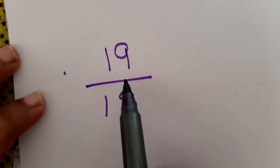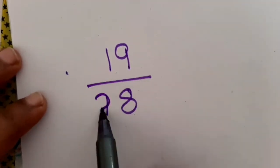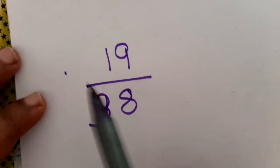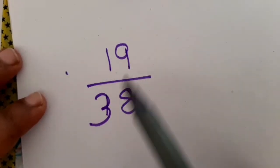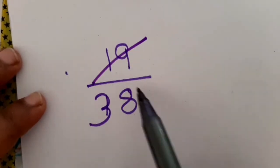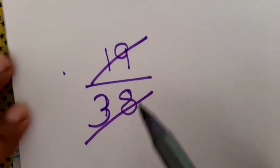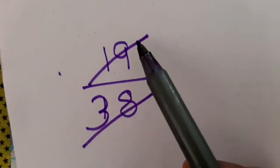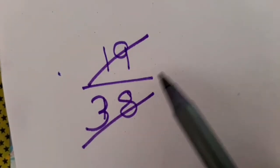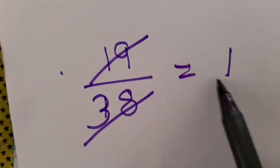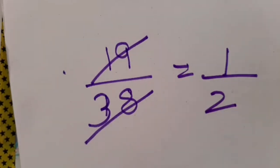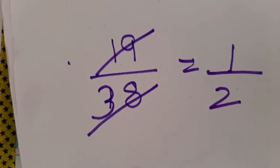The common factor of 19 — 19 is a prime number, so no other common factor will be there. But both numbers come in the table of 19 only. 38 is a multiple of 19: 19 once is 19, 19 twos are 38. So I will cancel both the numbers by 19. My answer is 1 upon 2.